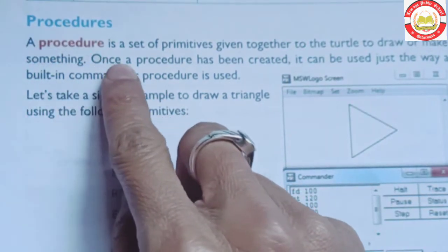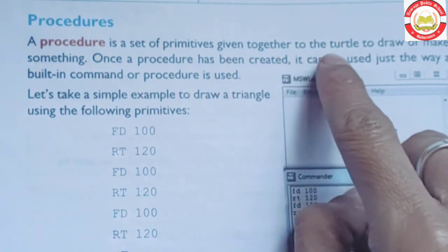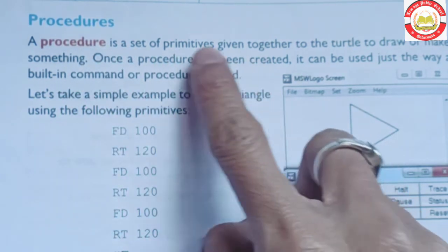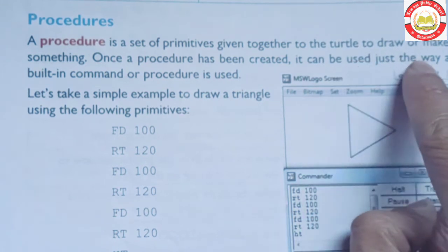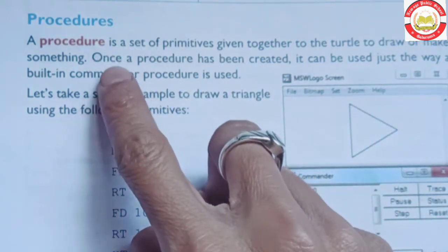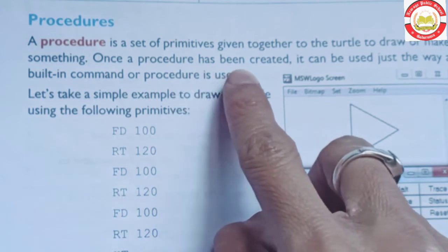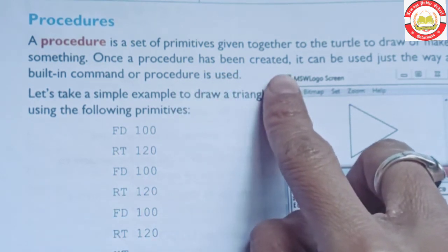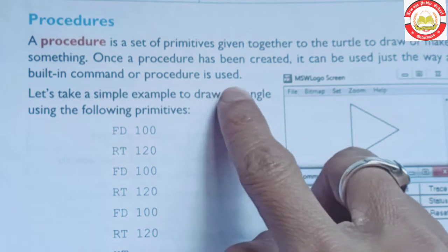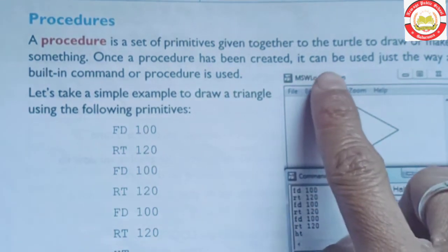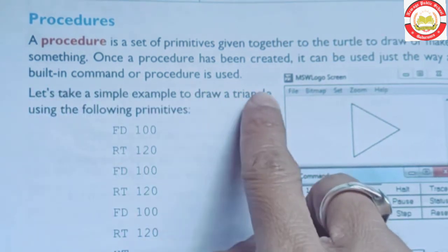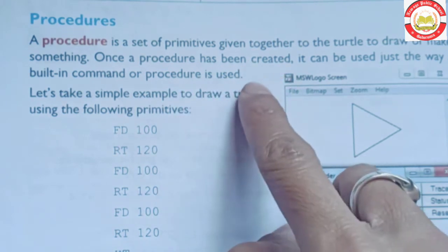Procedures: a procedure is a set of primitives given together to the turtle to draw or make something. Procedure primitives ka ek set hai jo ek saath diya jaata hai turtle ke dwara kisi cheeze ko — kisi pattern ko, kisi shape ko draw karne ke liye. Once a procedure has been created, it can be used just the way a built-in command or procedure is used.